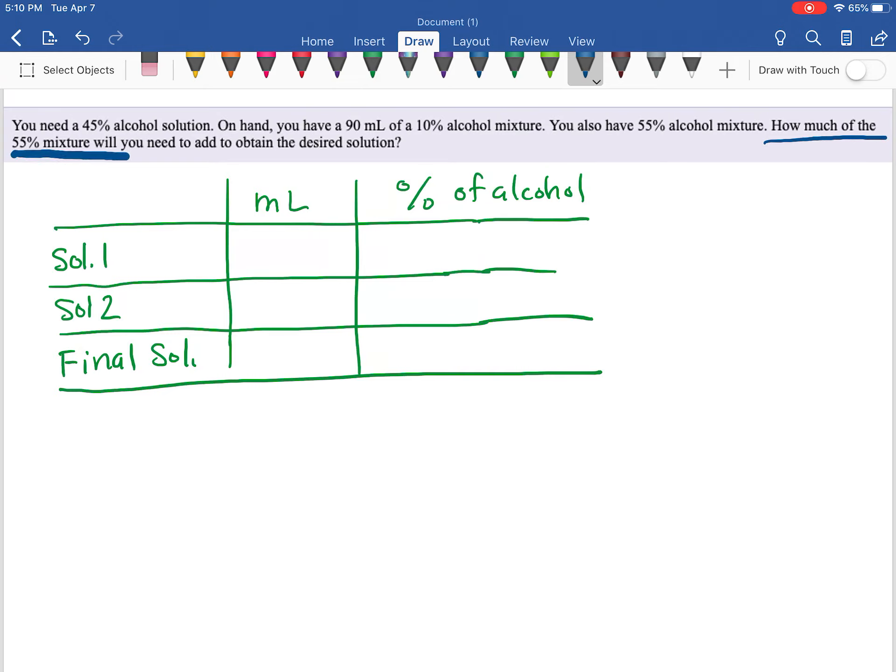So it's asking how much of the 55% mixture - that's what we're going to set one of our variables to. We're going to be looking for x. It's going to be the amount of the 55% solution in milliliters.